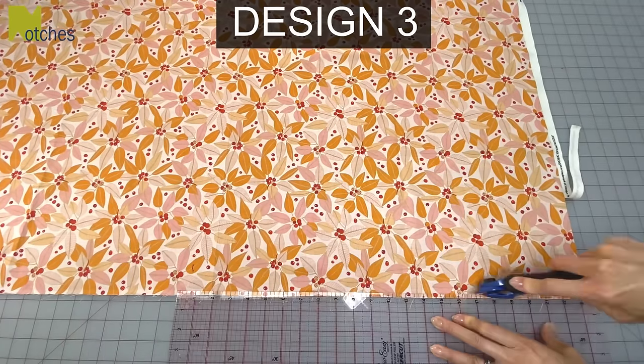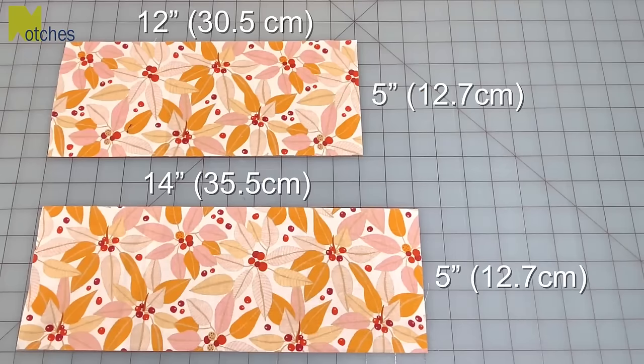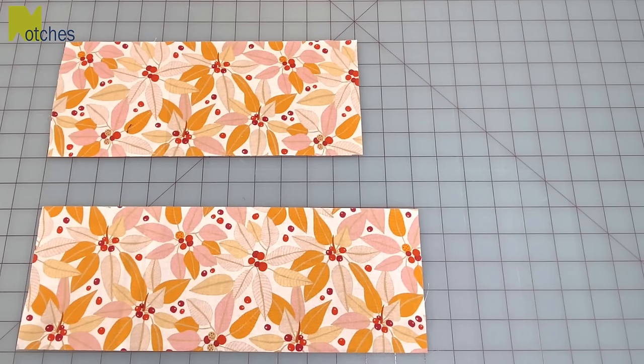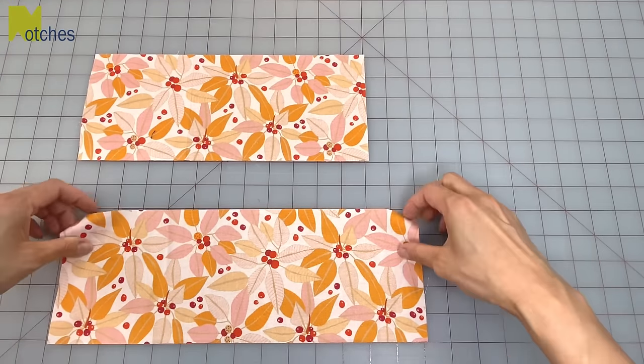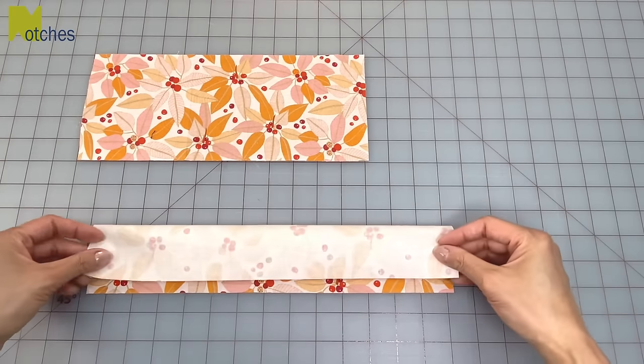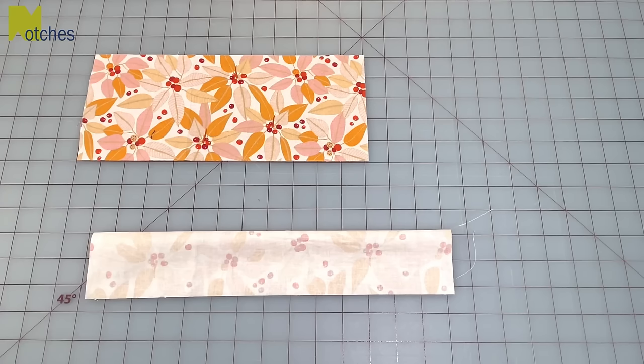For design 3, cut two pieces of fabric. One 5 inches by 12 inches and the other 5 inches by 14 inches. For both pieces of fabric fold in half and then on one end we need a 45 degree angle.